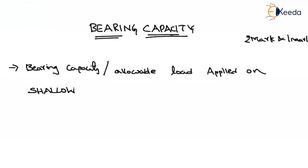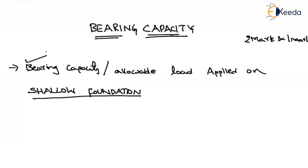In this chapter, we will only find out capacities and allowable loads on the shallow foundation. This is corresponding to the capacity of the soil, and this one depends upon the external load acting on the structure.